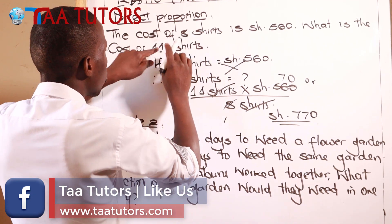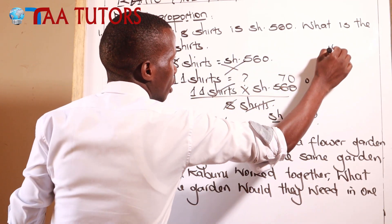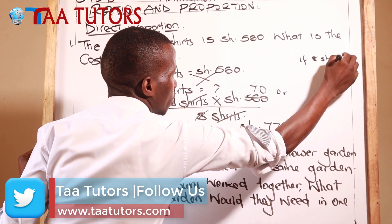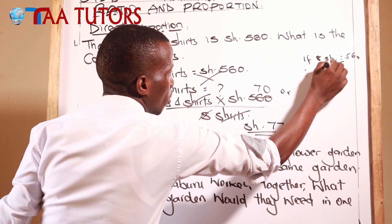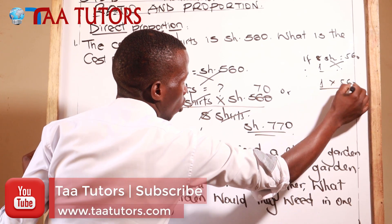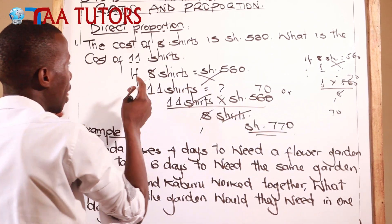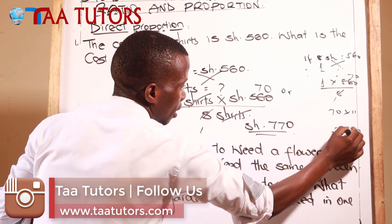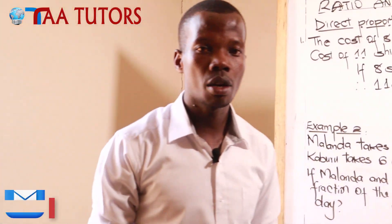Method two: you can get the cost of one shot. If eight shots equals 560 Kenya shillings, therefore one shot equals 1 times 560 all over eight, which gives you 70 Kenya shillings per shot. Since we need 11 shots, you multiply 70 times 11 to get 770 Kenya shillings — the same answer.